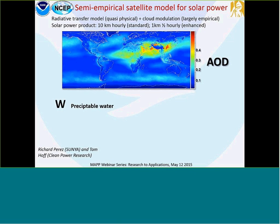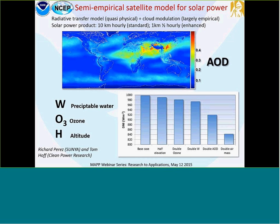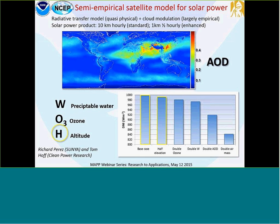In addition to aerosol, other factors also affect solar energy, like cloud, ozone, weather, location, and elevation. This bar chart shows that if you have a base case without all these influences, that's how much downwelling shortwave radiation you could have. But if you double AOD, you can substantially reduce how much solar energy is available. Aerosol is one of the most uncertain factors and also has a large impact on how much solar energy is available. This is a nice example showing the application for our aerosol forecast capability.